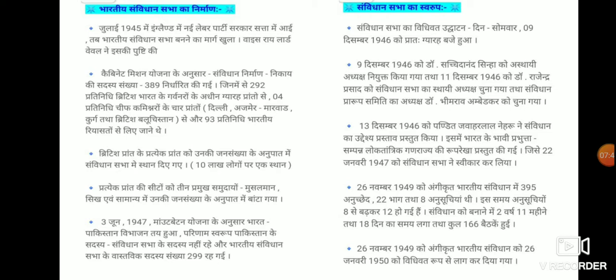93 representatives were allocated for Indian princely states. Each province of British India was given seats in the Constituent Assembly in proportion to its population — approximately one seat per 10 lakh people. The seats of each province were distributed among three major communities — Muslim, Sikh, and General — in proportion to their population. According to the June 3rd, 1947 Mountbatten Plan, India and Pakistan were partitioned. As a result, members from Pakistan were no longer part of the Indian Constituent Assembly, and the effective membership of the Indian Constituent Assembly became 299.